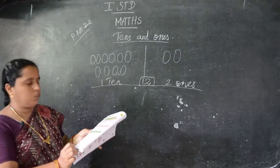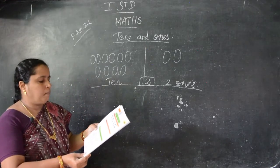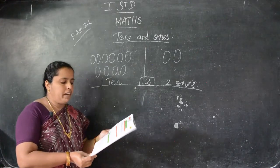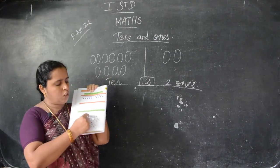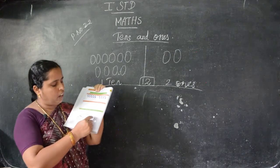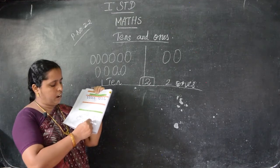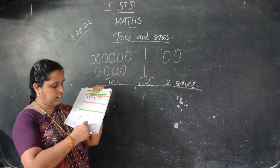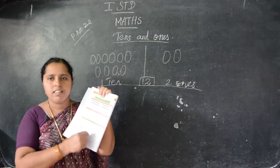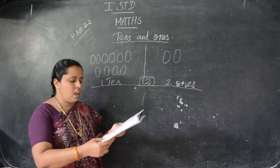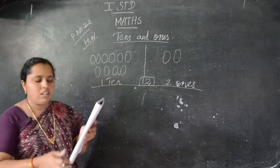Take your book page number 22 and draw this. Then next: join the number in order — complete the picture and color it. Here they are given the numbers. You have to join the numbers: 1, 2, 3, 4, 5, 6, 7, 8, 9, 10, 11, 12, 13, 14, 15, 16, 17, 18, 19, 20. You have to join the numbers on dots and color this picture. Children, this is the homework — page number 22, join the dots and color the picture is homework.